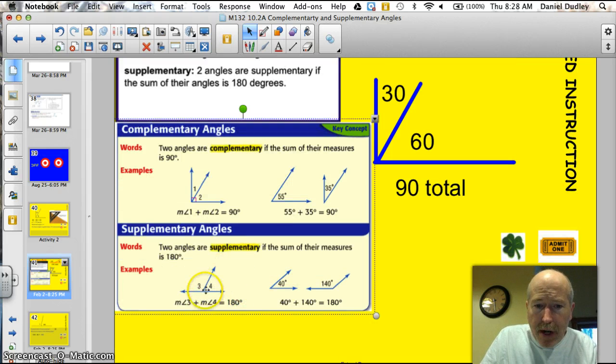Just like that, supplementary angles. We have angle 3 and 4. Notice the straight line on the bottom. A straight line bisected. That's going to be supplementary because angles 3 plus 4 equal 180 degrees.